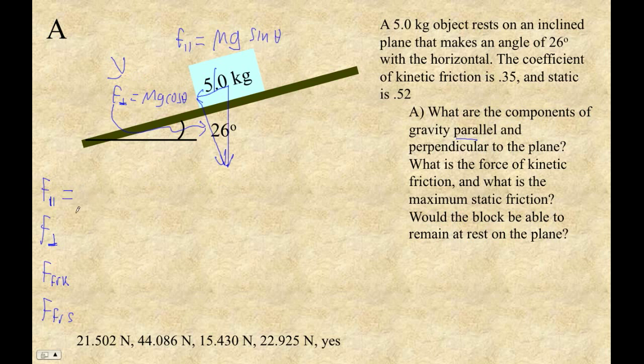Parallel force is mg sin θ. So it's 5 times 9.81 times the sine of 26. I get 21.502. Now with two sig figs, I'd have to say 22 newtons. But I'm going to use this number so much that I've put it down here. And we'll just use the more exact value there.